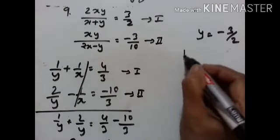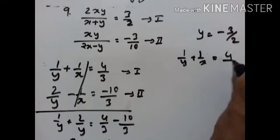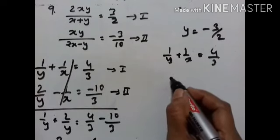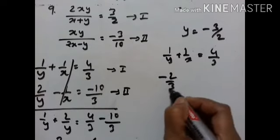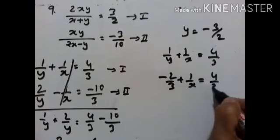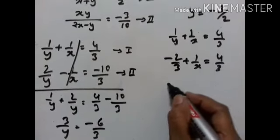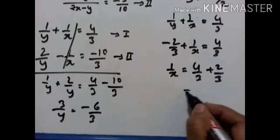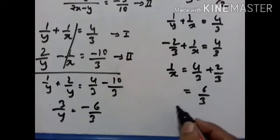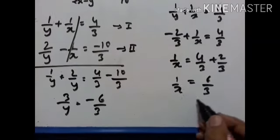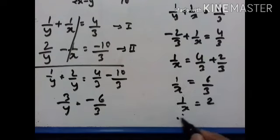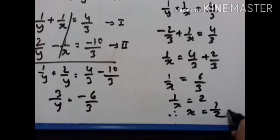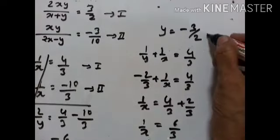Substituting y equals minus 3 upon 2 into the first equation 1 upon y plus 1 upon x equals 4 upon 3: minus 2 upon 3 plus 1 upon x equals 4 upon 3. So 1 upon x equals 4 upon 3 plus 2 upon 3, which equals 6 upon 3, that is 2. Therefore 1 upon x equals 2, giving x equals 1 upon 2. So x equals 1 upon 2 and y equals minus 3 upon 2.